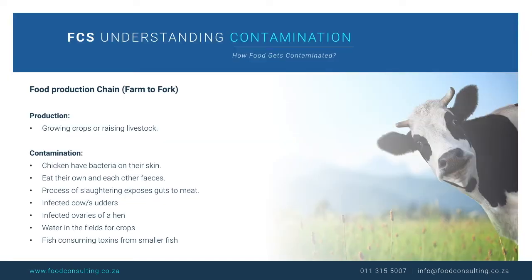It takes several steps to get food from farm to fork. We call these steps the food production chain. Contamination can occur at any point along this chain: production, processing, distribution and preparation. So how does food get contaminated? Let's take a look at the steps in this chain so that we can identify where each step of contamination can occur.